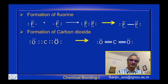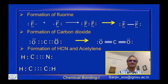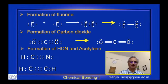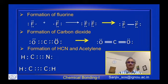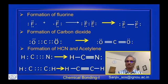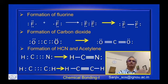Looking at HCN and acetylene: in HCN, a triple bond is formed between carbon and nitrogen. In acetylene (C2H2), there is a C≡C triple bond and single C–H bonds. A single shared electron pair is represented as one line (single bond), two pairs as two lines (double bond), and three pairs as three lines (triple bond).